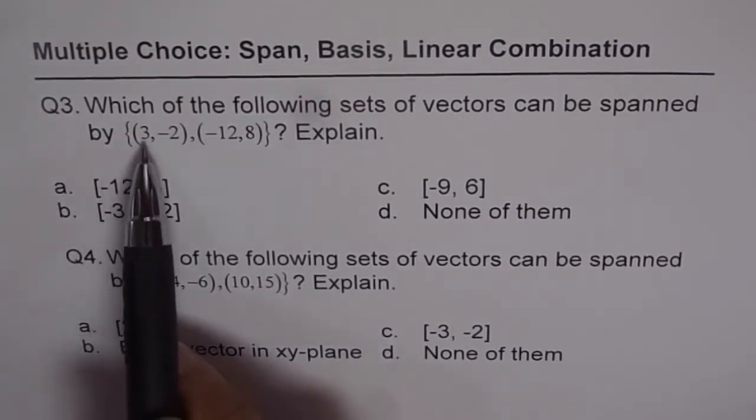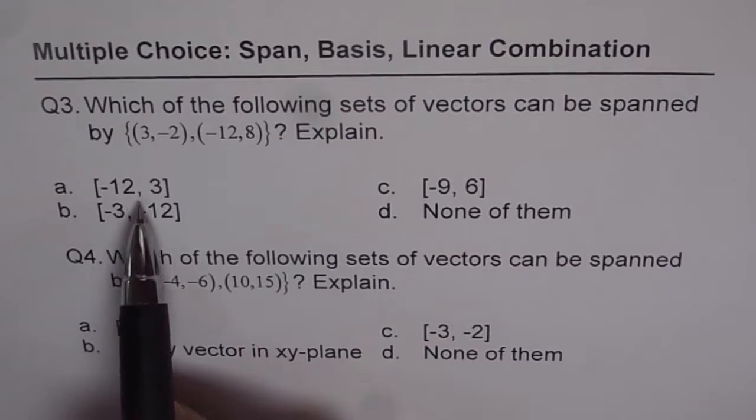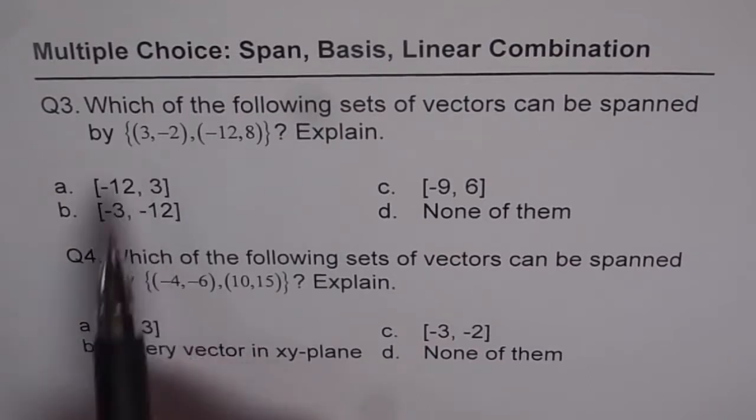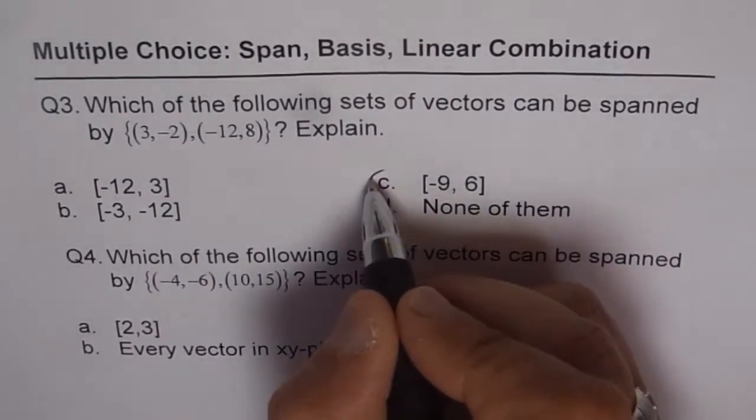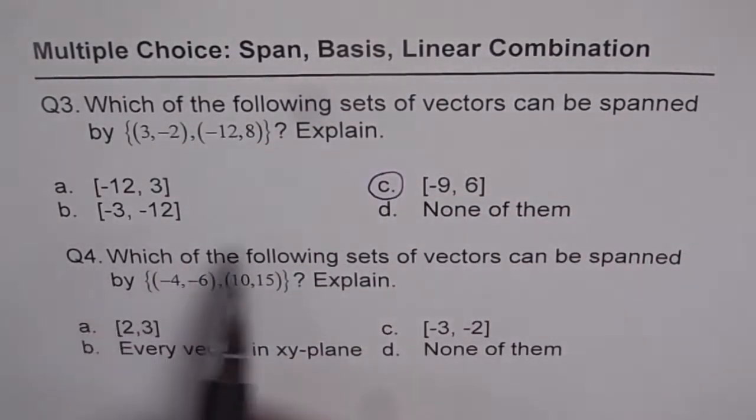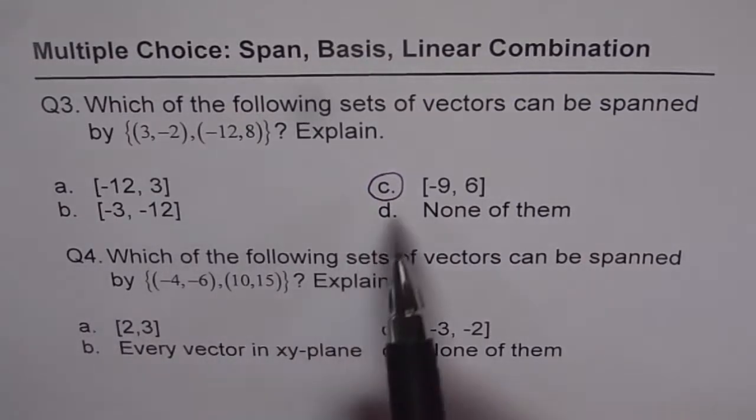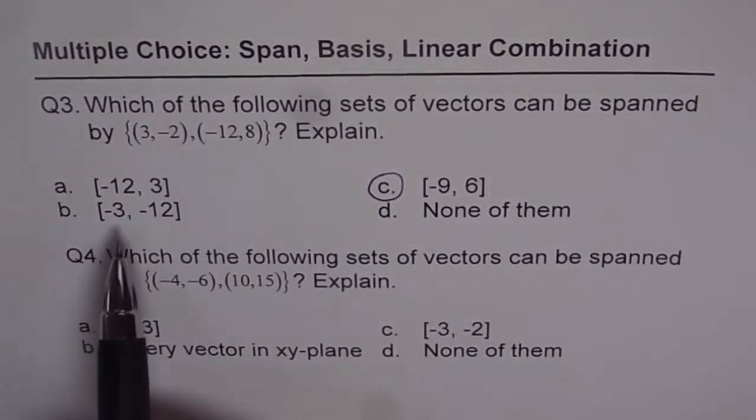So {-12, 3}. If I multiply by -4, do I get this? No, I don't. How about this? {-9, 6}. Let's multiply by -3. Do I get it? Yes, I do. So this is correct, and none of them is wrong. Obviously I got one of them, and this one doesn't work.